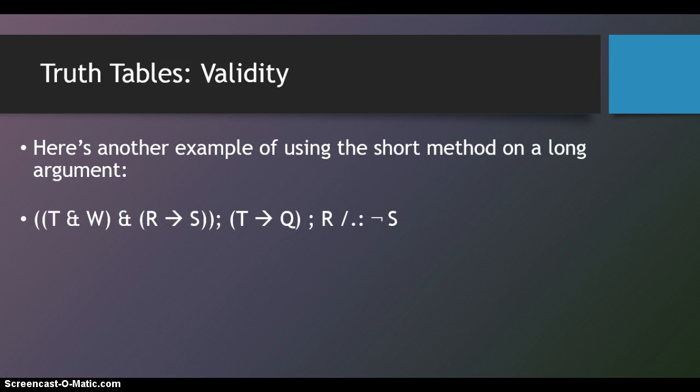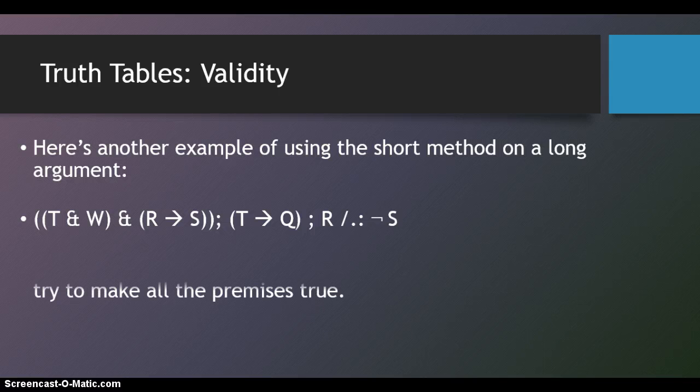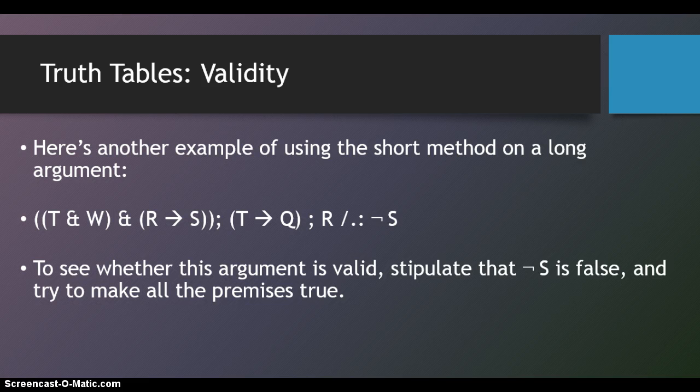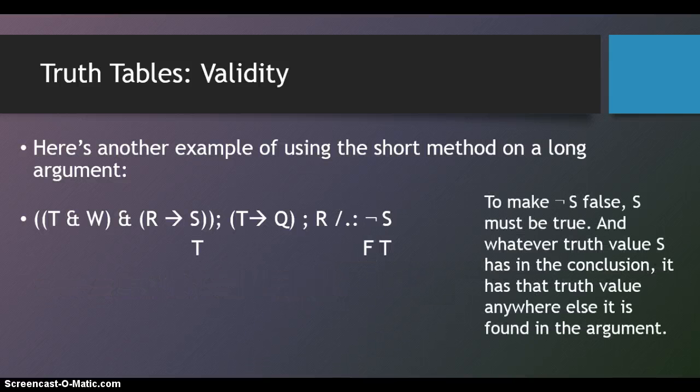Here's another example using the short method on a long argument. Here we have the conclusion that's not S. So, it's a complex claim. It's not a simple claim. It does have an operator. The operator is the negation. To see whether this argument is valid, we stipulate that not S is false, and then try to make all the premises true. Same method we've been using. Now, to make not S false, we have to make S true. And whatever truth value S has in the conclusion, it has that truth value anywhere else it's found in the argument. In this case, in premise one.